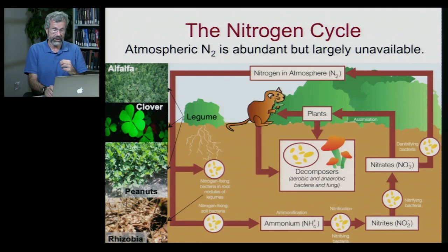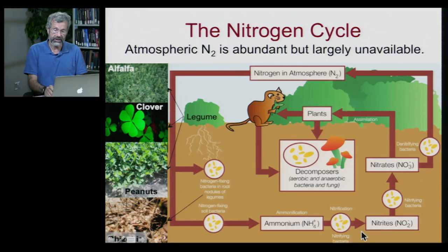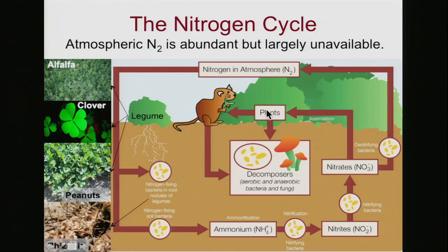So we have nitrogen-fixing bacteria that convert N2 into ammonium. Then other bacteria convert ammonium into nitrites, and further bacteria convert those into nitrates. It's nitrates that can then be absorbed by plants and used for the manufacture of proteins, DNA, and all the essential elements of living things.